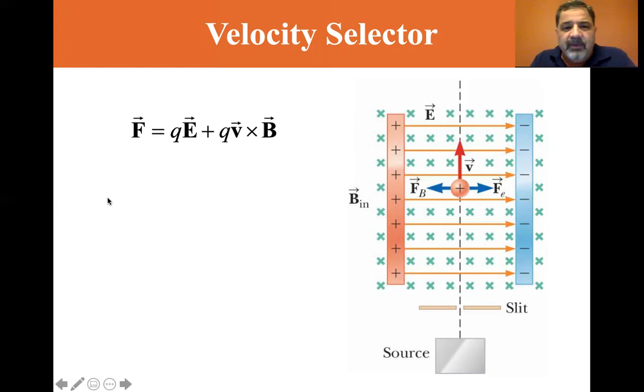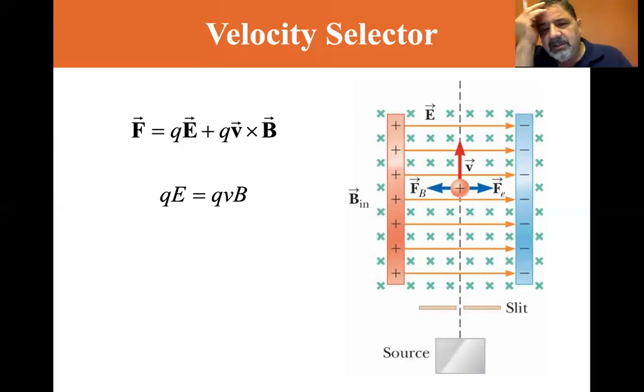So we have the force equals QE, the electric force and plus QVB, QV cross B. So QE, since it's 90 degrees is sine of theta, a sine of 90 is one. So it's just QV cross B is equal to just QVB. So we can equate those QE equals the QVB and V is equal to, you know, the Q's cancel. So the velocity is equal to E divided by B, the electric field divided by the magnetic field.